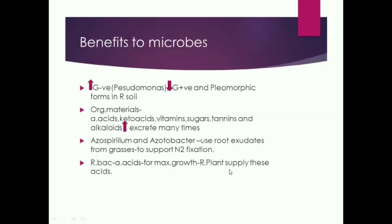Benefits to the microbes: there is an increased proportion of gram-negative rods and decreased proportion of gram-positive and pleomorphic forms in the rhizospheric soil. Organic materials required for the microbes — such as amino acids, keto acids, vitamins, sugars, tannins, and alkaloids — are excreted many times. Azospirillum and Acetobacter use the root exudates from the grasses to support nitrogen fixation. Rhizospheric bacteria require amino acids for their maximal growth, and the rhizospheric plant supplies these acids.